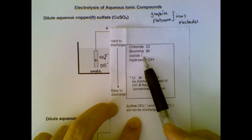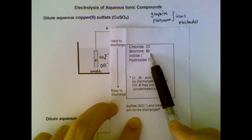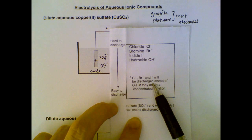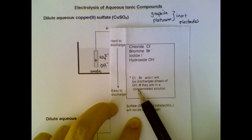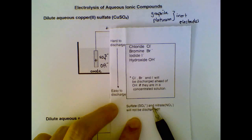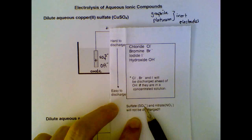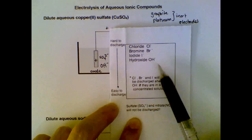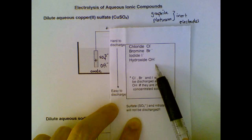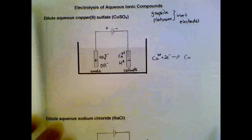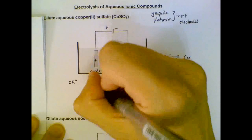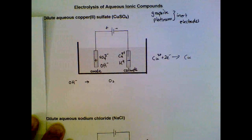Within your syllabus, take note especially when halides are involved — chlorides, bromides, and iodides. Under dilute conditions, hydroxides will be discharged ahead of halides. But under concentrated conditions, concentrated chlorides, bromides, or iodides will be discharged ahead of hydroxides. For sulfates and nitrates, the easy part is that they will never be discharged. So hydroxides will always be discharged ahead of sulfates and nitrates. In this case, since sulfates will not be discharged, the hydroxides are preferentially discharged.